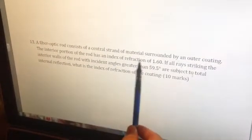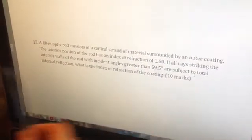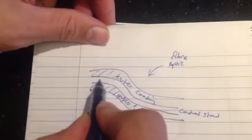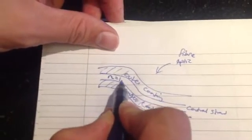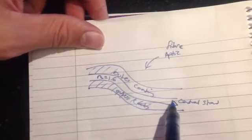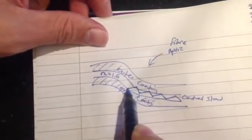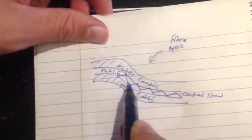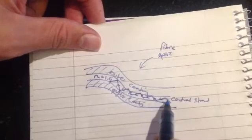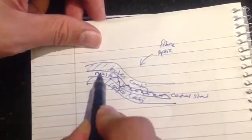The next part of the question says the interior portion of the rod has an index of refraction of 1.6. So, the interior means the central strand. This has an index of refraction, N, of 1.6. Now remember the light starts inside this cable and what happens is it bounces, internally reflects inside. So remember if the light is starting from the middle, this is going to be the first one, N1.